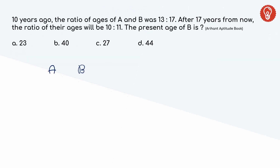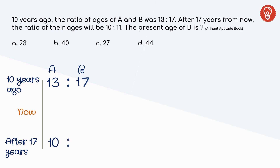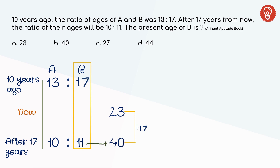In this question, we have no clue about their present age, but 10 years ago A and B's ratio was 13:17, and 17 years from now it is 10:11. Both 10 years ago and 17 years hence are calculated from the present age. We are asked to find B's present age. Keeping the ratios as reference, from the first option let's say B is 23 now. After 17 years he turns 40 — 40 is not divisible by 11, hence 23 is the wrong answer.